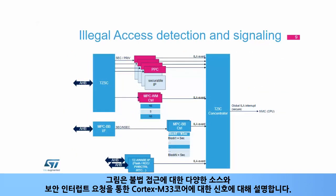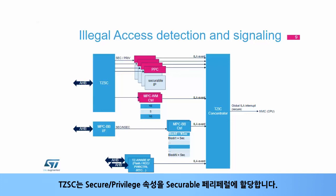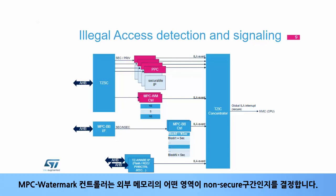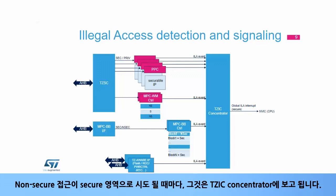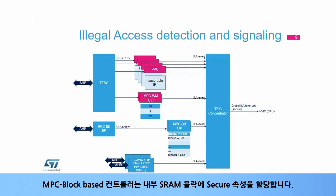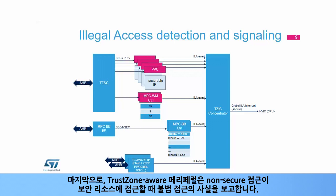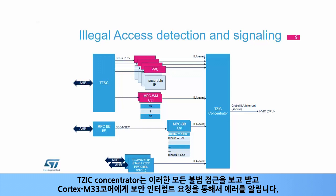This figure details the various sources of illegal accesses and their signaling to the Cortex M33 core through a secure interrupt request. The TZSC assigns secure and privileged attributes to securable peripherals; whenever a non-secure access to a secure peripheral is attempted, an illegal access is reported to the TZIC concentrator. The MPC Watermark controller determines which areas of external memories are non-secure; whenever a non-secure access to a secure area is attempted, an illegal access is reported to the TZIC concentrator. The MPCBB block-based controller assigns the secure attribute to internal SRAM blocks; whenever a non-secure access to a secure block is attempted, an illegal access is reported to the TZIC concentrator. Finally, TrustZone Aware peripherals report an illegal access when a non-secure access attempts to access a secure resource. The TZIC concentrator receives all these illegal access reports and signals the error to the Cortex M33 core through a secure interrupt request.